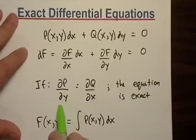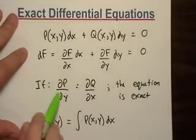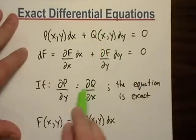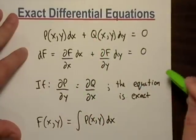Okay, now, that alone doesn't, that's just the form. The way you tell if it's exact is if the partial of P with respect to y and the partial of Q with respect to x, if those are equal to each other, then it's exact.